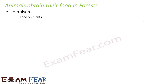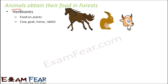Why are they called herbivores? 'Herb' means plants, so herbivores are those who eat plants. Examples of herbivores include cow, goat, horse, and rabbit. Deer, which is very commonly seen in forests, is also an example of a herbivore.